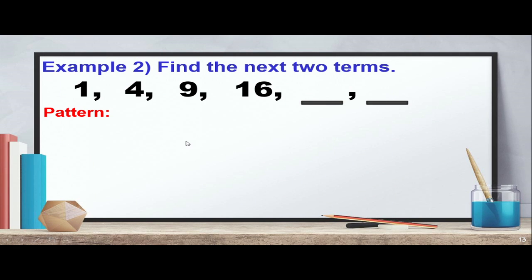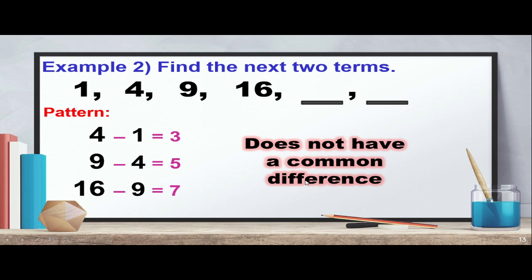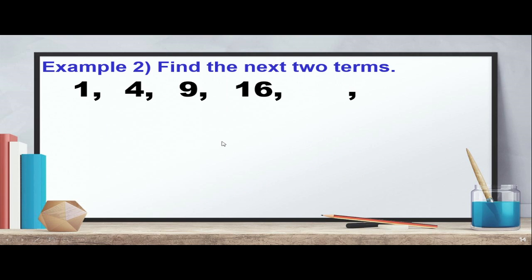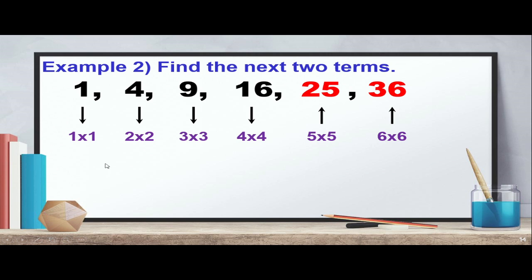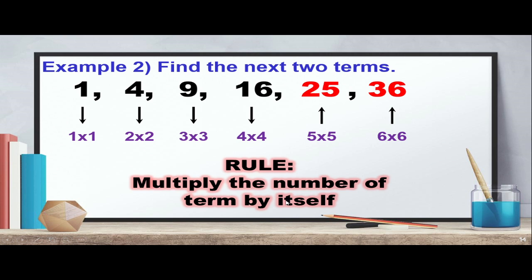Example 2: find the next two terms for 1, 4, 9, 16. We check differences: 4−1=3, 9−4=5, 16−9=7 — no common difference. Instead, notice: 1×1=1, 2×2=4, 3×3=9, 4×4=16, 5×5=25, 6×6=36. The rule is to multiply the term number by itself — each term is the square of its position.